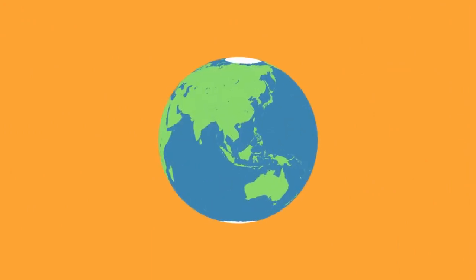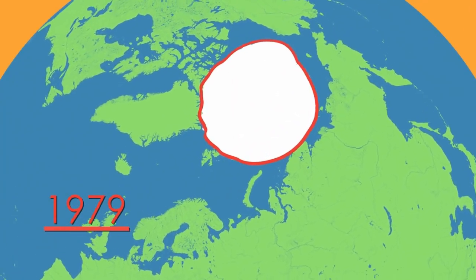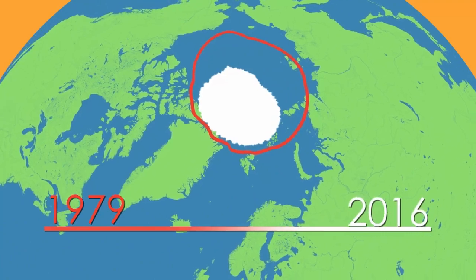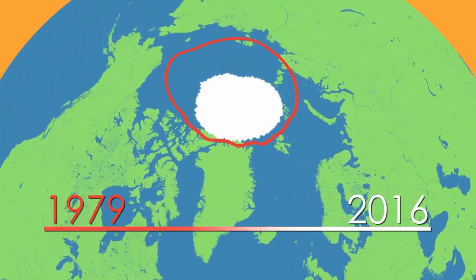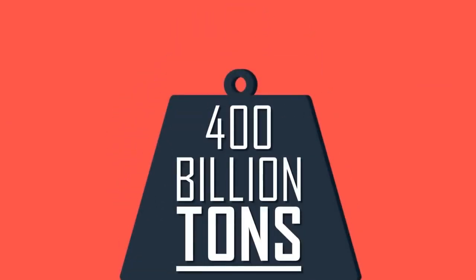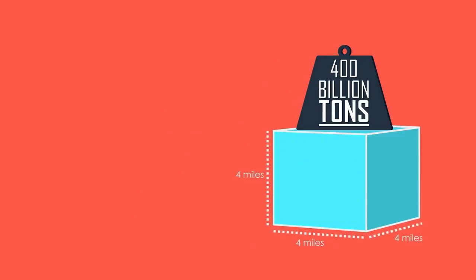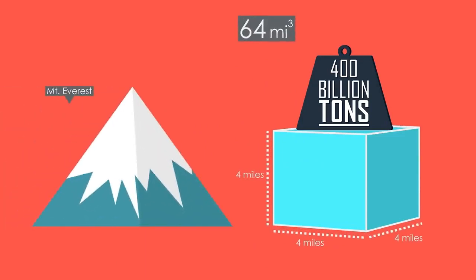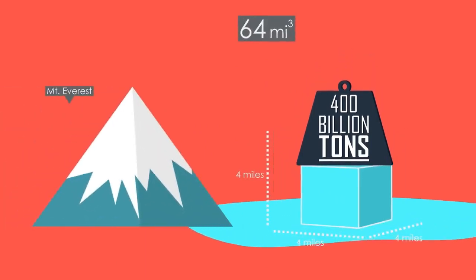Since the oceans are becoming warmer, the polar ice caps are melting, which has caused almost 65% of the polar ice caps to melt since 1979. The Earth loses on average 400 billion tons of ice each year. That's like a giant block of ice 4 miles long on each side, 64 cubic miles, that melts and is added to the ocean.